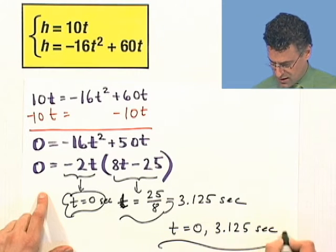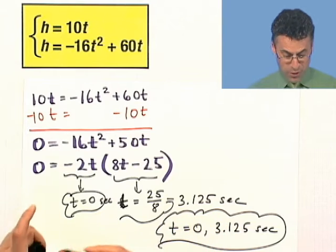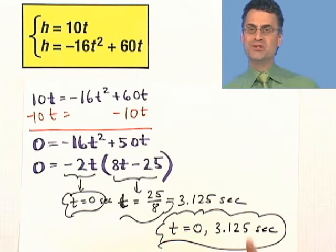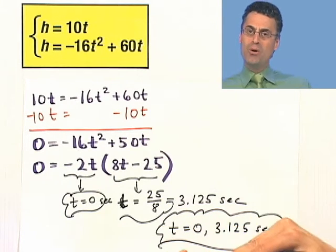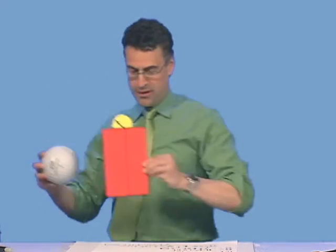So what's going on here? How come there are two answers? Well, there are two answers because there was an invisible solution at the very beginning. Remember, when they both started, they were both at the ground level. So they both were at the same location. That's when t equals zero. And then they took off and did this stuff.